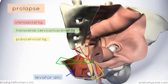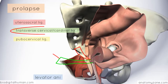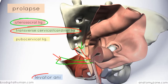If these supporting structures are weakened, you can get descent of the pelvic organs. The most important ones are the cardinal ligaments and the utero-sacral ligaments, as well as the levator ani muscle, which supports all the pelvic viscera and has a sort of sphincter function around them.